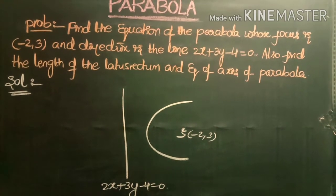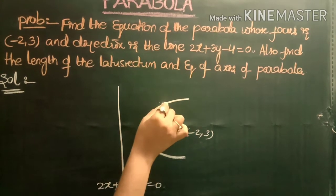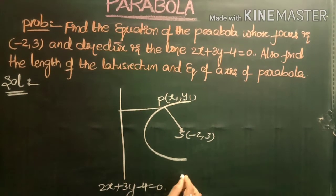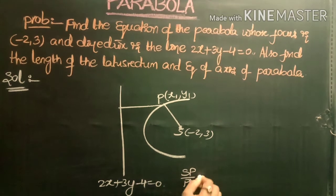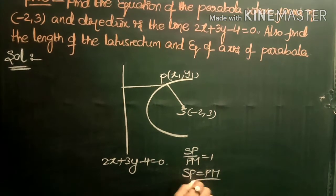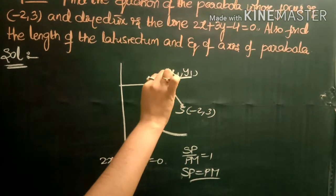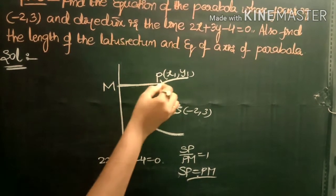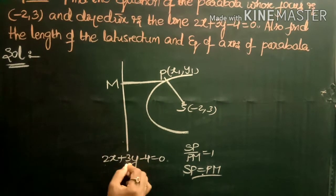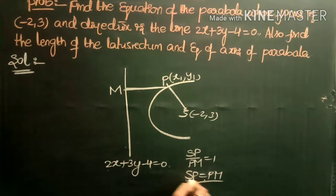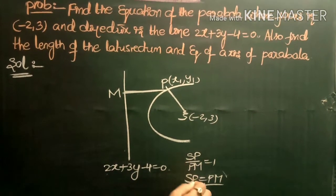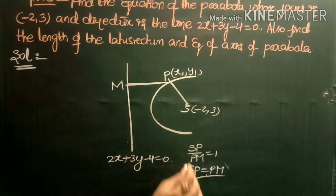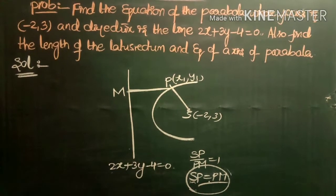To find the equation of the parabola, we use the definition of the parabola. Let P(x1, y1) be any point on the parabola. By definition, SP/PM = 1, which means SP = PM, where SP is the distance between focus S and point P, and PM is the perpendicular distance from P(x1, y1) to the directrix 2x + 3y - 4 = 0. Substituting these values and simplifying gives the equation.